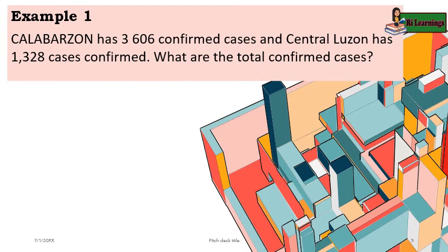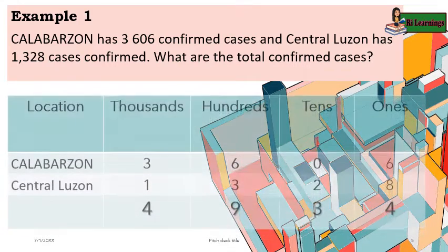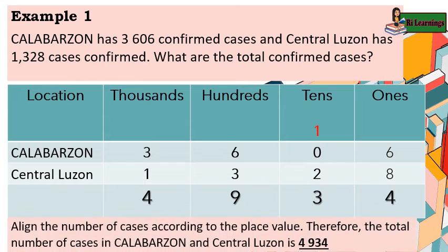Example number one: Calabarzone has 3,606 confirmed cases and Central Luzon has 1,328 confirmed cases. What are the total confirmed cases? Align the numbers according to place value, then do the addition from right going to left.